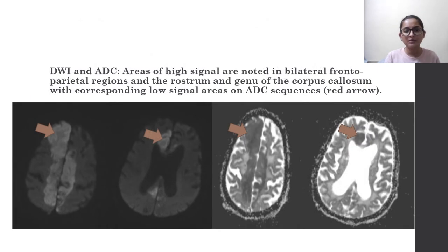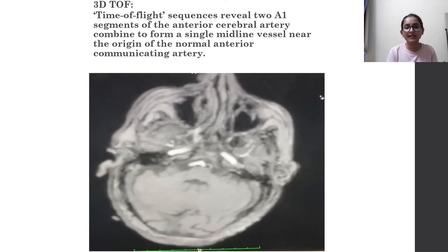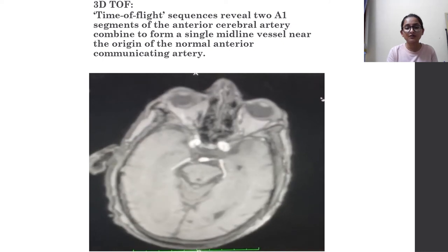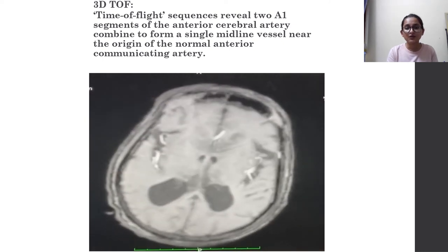DWI and ADC sequences revealed areas of high signal in the bilateral frontoparietal regions and the rostrum and genu of the corpus callosum, with corresponding low signal areas on ADC sequences, shown by the red arrows. 3D time-of-flight sequences revealed two A1 segments of the anterior cerebral artery combining to form a single midline vessel near the origin of the normal anterior communicating artery, which is not seen to continue into the high parietal region, suspicious for thrombosis.